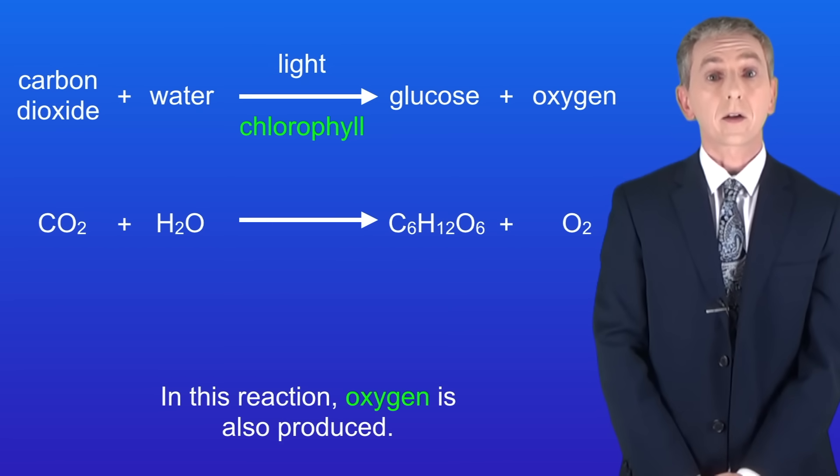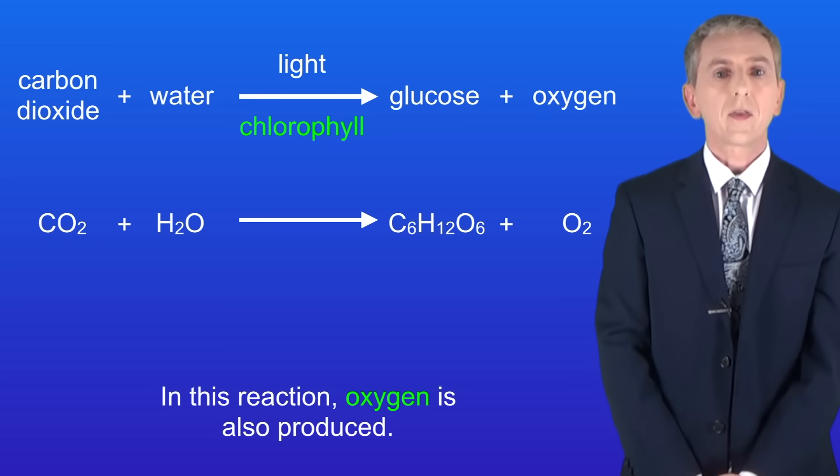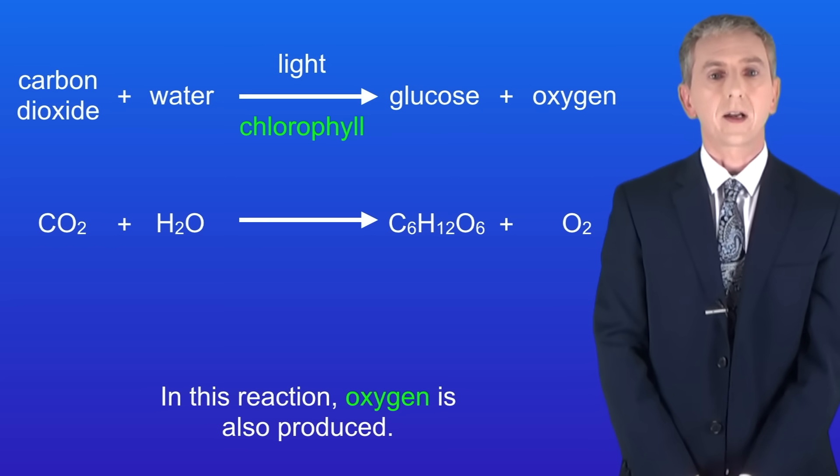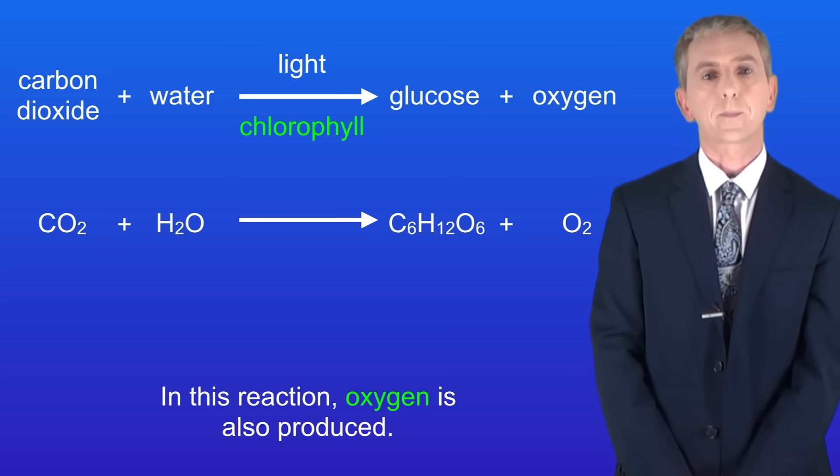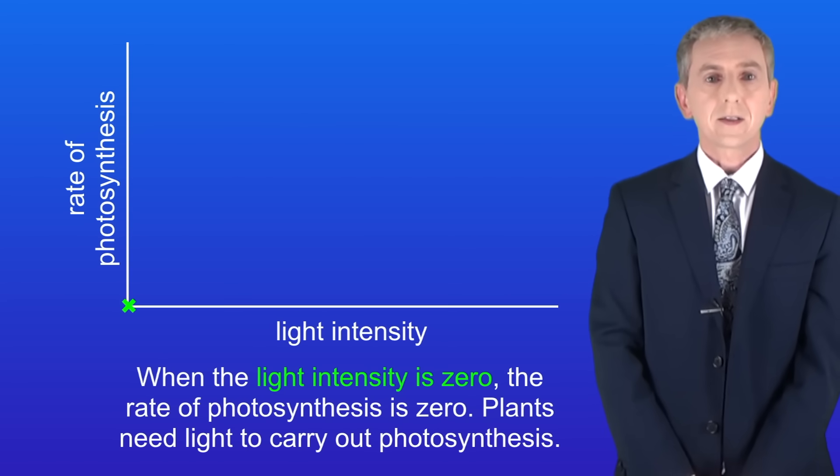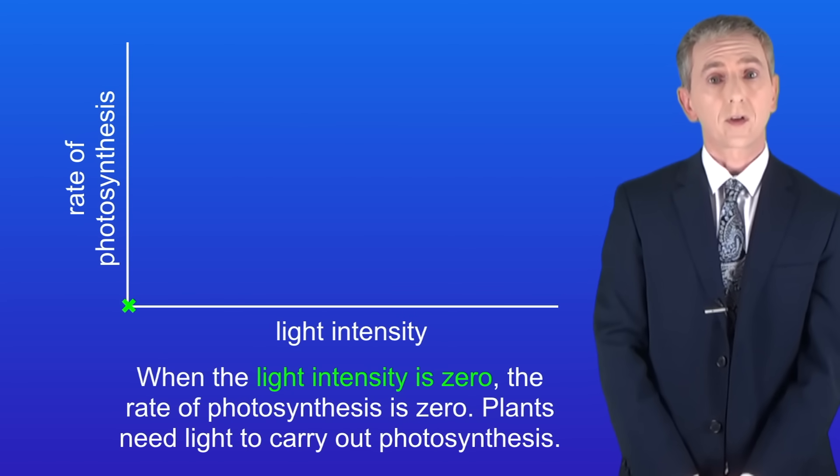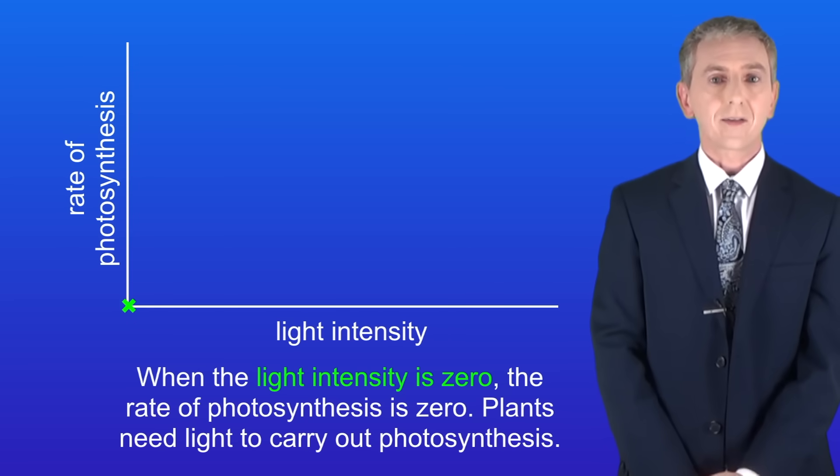Imagine that I take a plant and I increase the light intensity, in other words the amount of light, but I keep everything else constant. I then measure the rate of photosynthesis at each level of light intensity. When the light intensity is zero, the rate of photosynthesis is zero and that makes sense as plants need light to carry out photosynthesis.